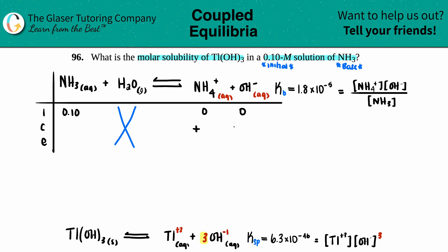C stands for change. Remember, you could only go up from nothing, so on the product side this would have to be plus and you would have to subtract on the other side. We do not know how much, so I'll just label it as x: minus x, plus x, and plus x. And then equilibrium is just I and C pulled together. So for NH₃ it would be 0.10 minus x, zero plus x is x, zero plus x is x, and these three pieces of information are going into your Kb expression.